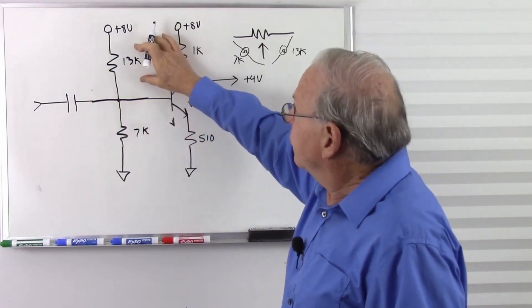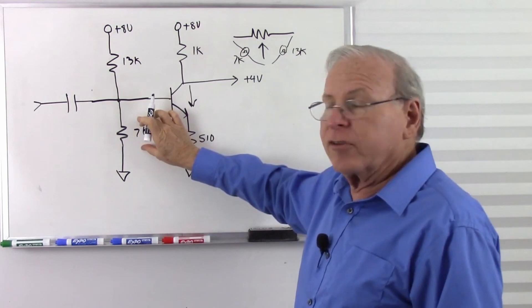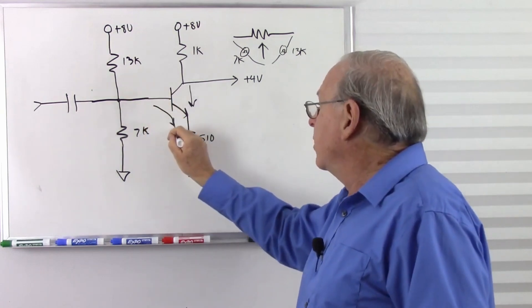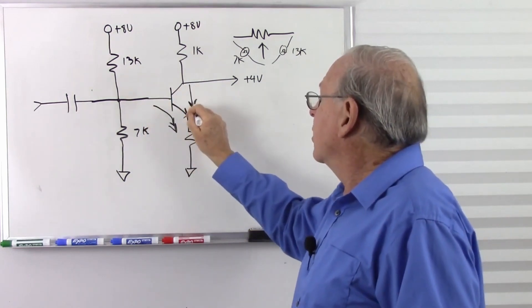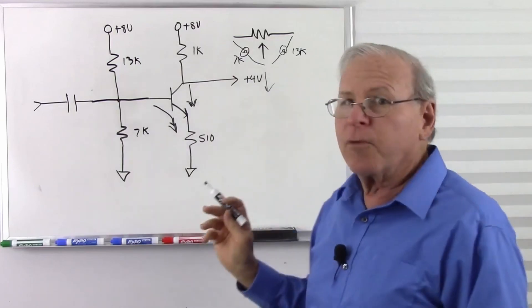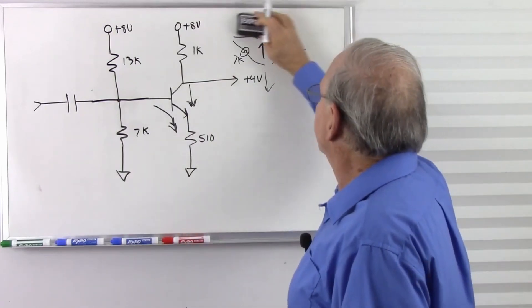I would get more current in the base, more current in the collector. That would pull this down something below 4 volts. I want that to remain 4 volts. Let's get the clutter out so we don't lose track of what we're doing.